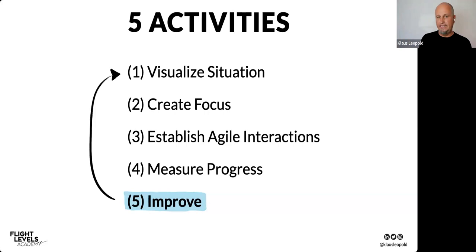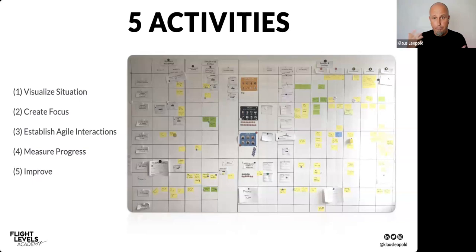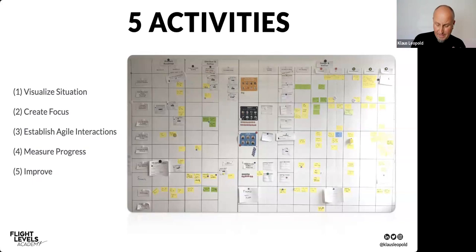These five activities are the core activities of Flight Levels. Organizations establish them in their daily doing, and the outcome is a visualization — a board with policies around creating focus, some meetings, and measurements. But what's unique about this? It could easily look like a Kanban board or a Scrum board. The key is that we're not applying these five activities somewhere isolated in the organization.